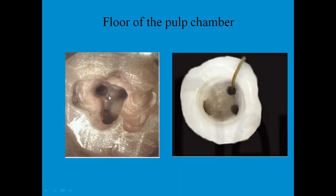The floor of the pulp chamber is where we can appreciate the orifices. As mentioned in the previous lecture, the orifices are where the pulp chamber extends into the root canals — something like gateways. The pulp chamber floor appears darker in color when compared to the walls of the dentine.